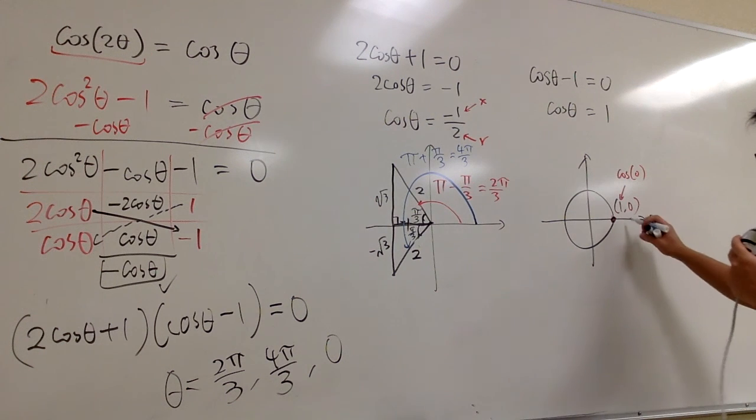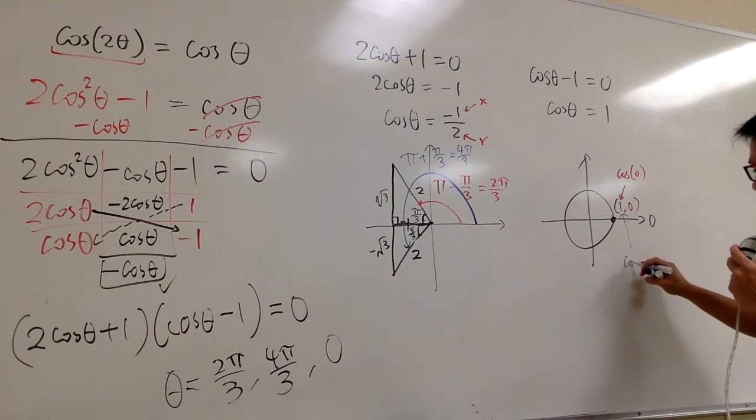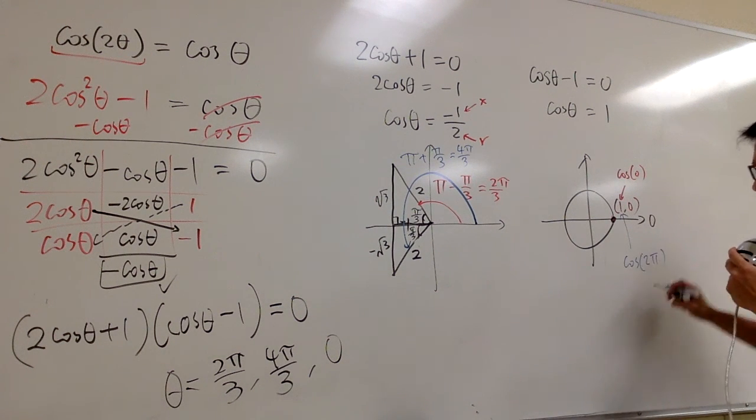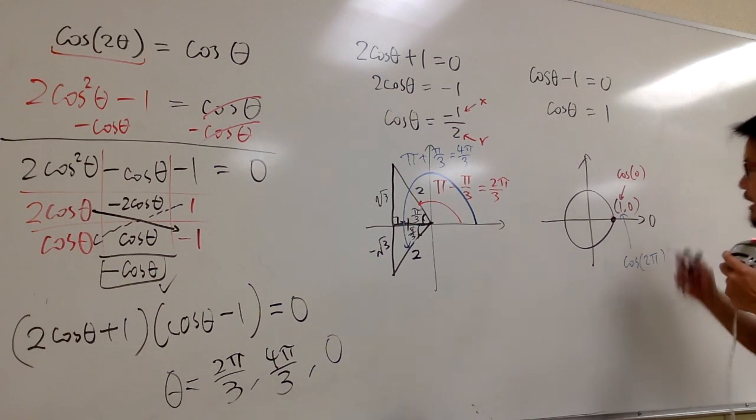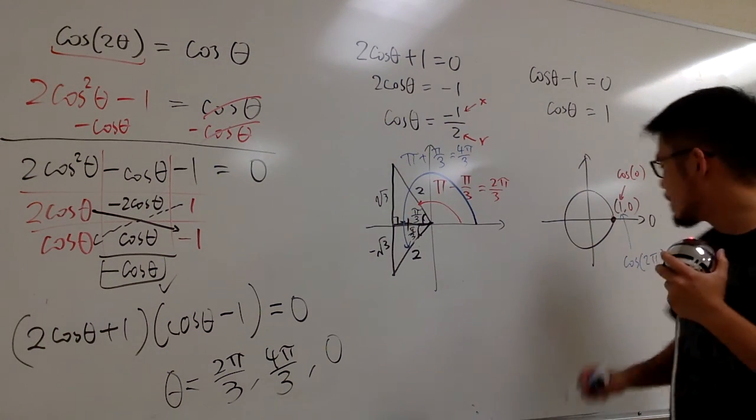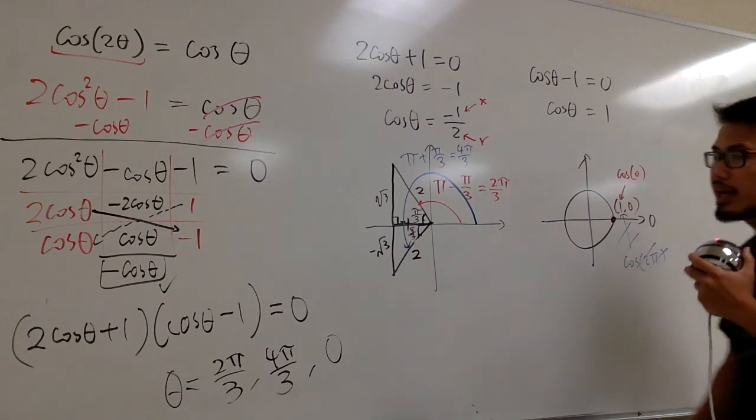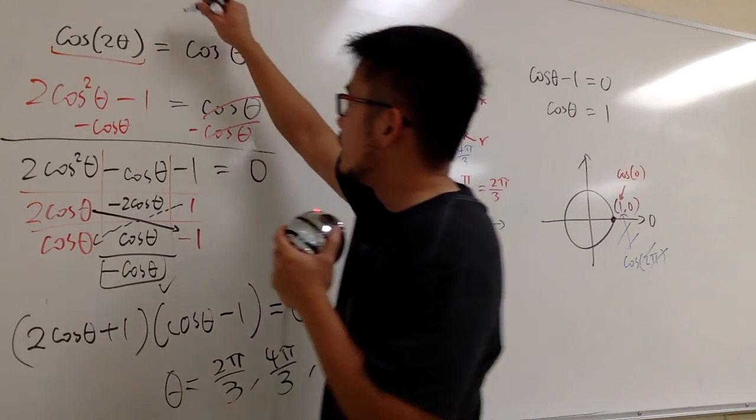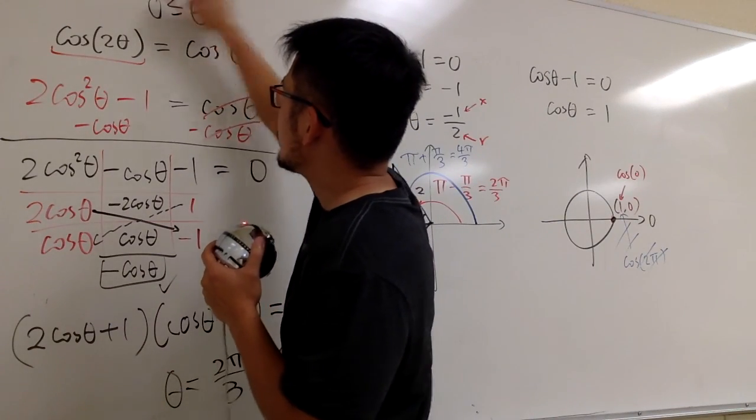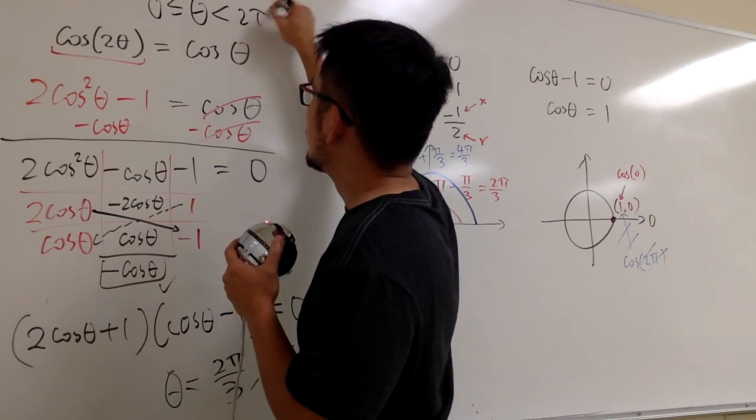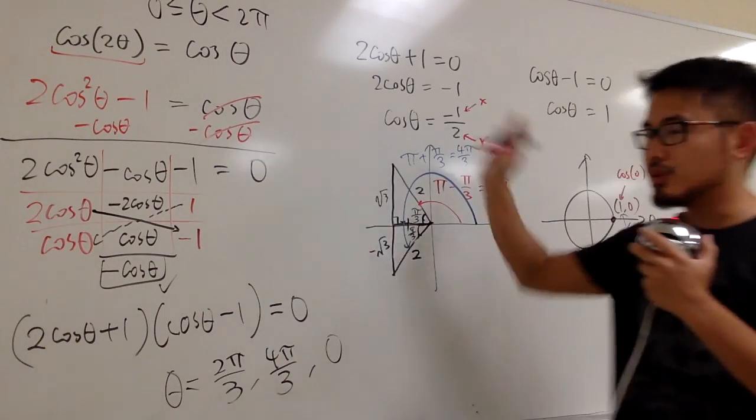And if you turn around, technically, yes, we can also say cosine of 2π. Cosine of 2π is also equal to 1. However, in our case here, I just want θ to be in between 0, but then not exactly 2π. Okay? We just want to do that.